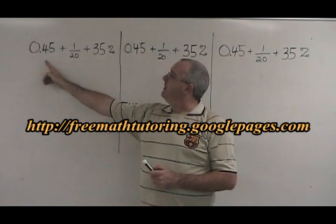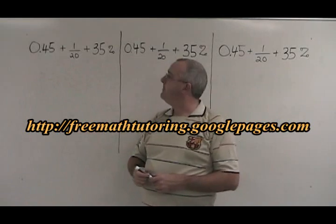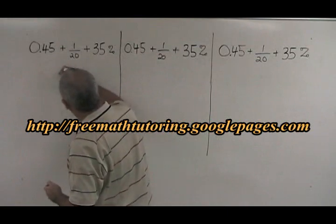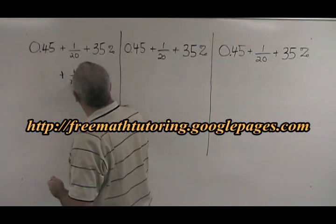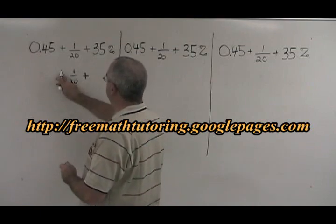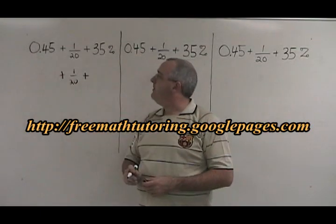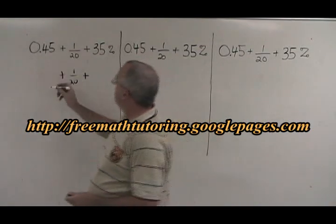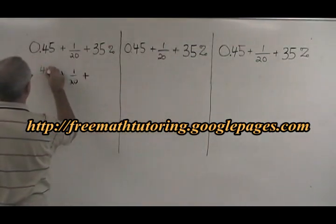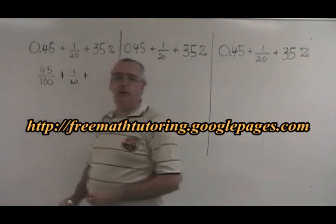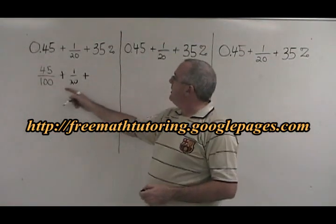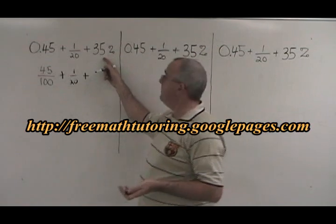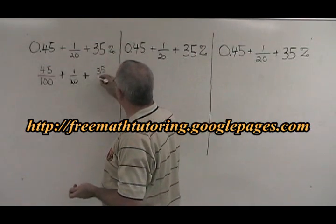Let's start by converting this expression so that it's all fraction. The middle term is already a fraction, 1/20, so that is carried down. 0.45, if we want to convert that to a fraction, we know that there are two digits after the decimal, so I can write 45 over 100. Now we have a fraction and a fraction. 35%, all percents can be written as a fraction over 100. 35 over 100.